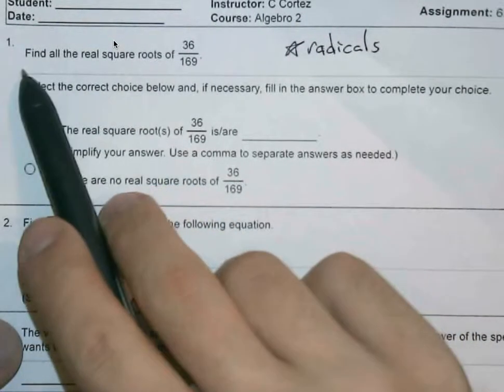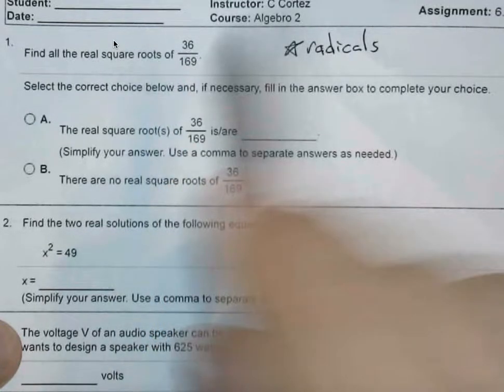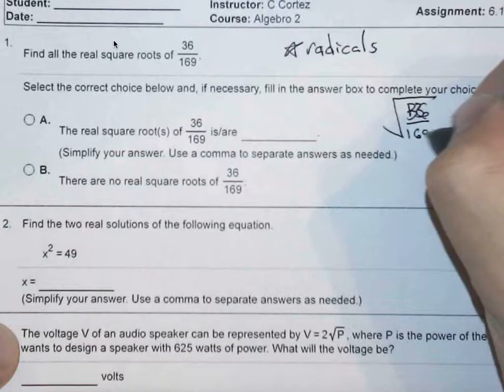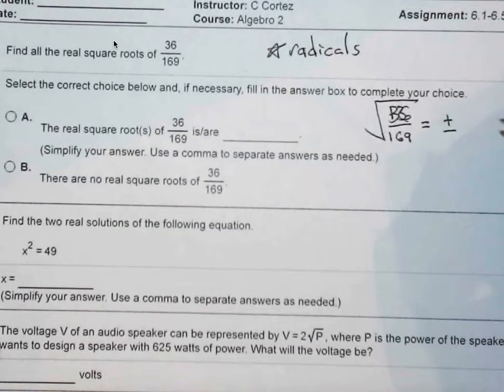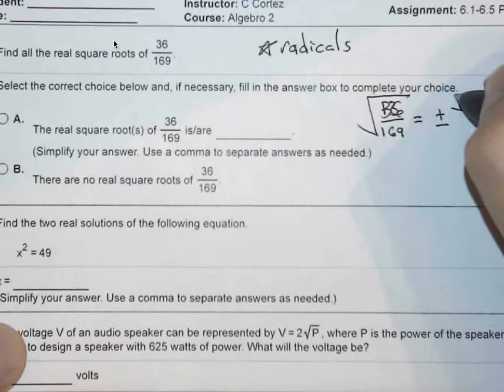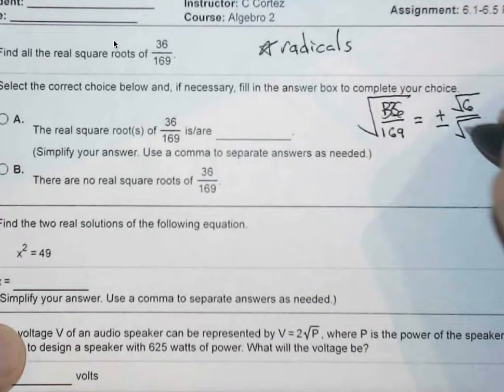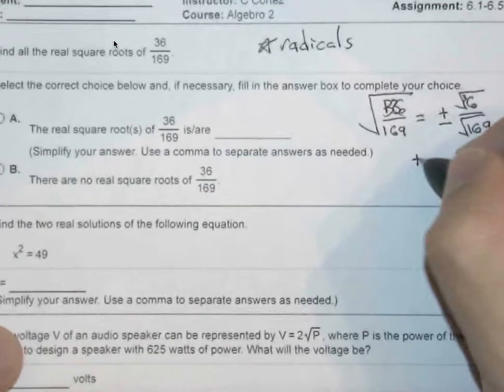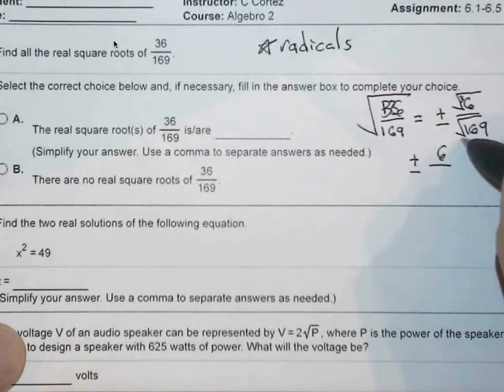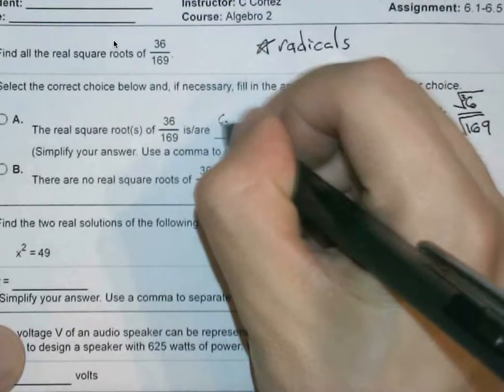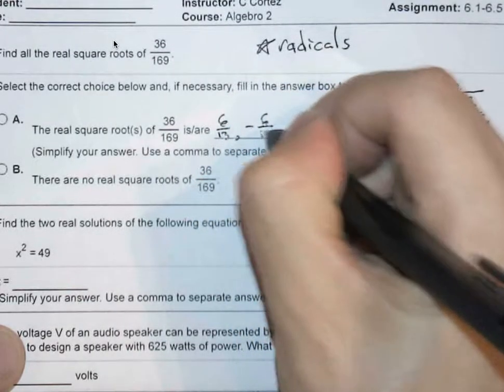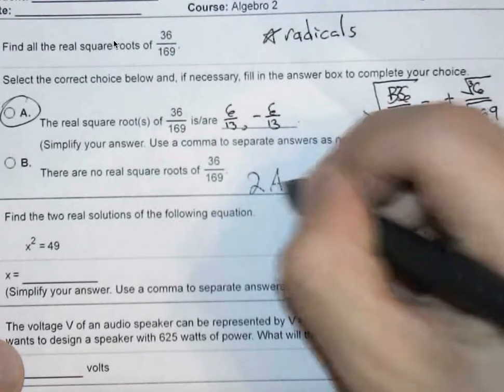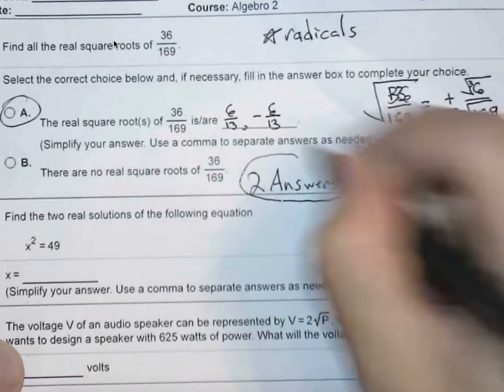For here, we're trying to find the real square roots of 36 over 169. Keep in mind that whenever we take a square root, we're allowed to have two answers because if we square whatever this might be, we can end up with the fraction that we just had. So you're allowed to break this apart, saying that you have the square root of 36 over the square root of 169, which is eventually plus or minus 6 over 13. That one's pretty simple. The key thing here is to remember that you'll have two answers because whenever we take square roots, chances are we have the positive version and the negative version.